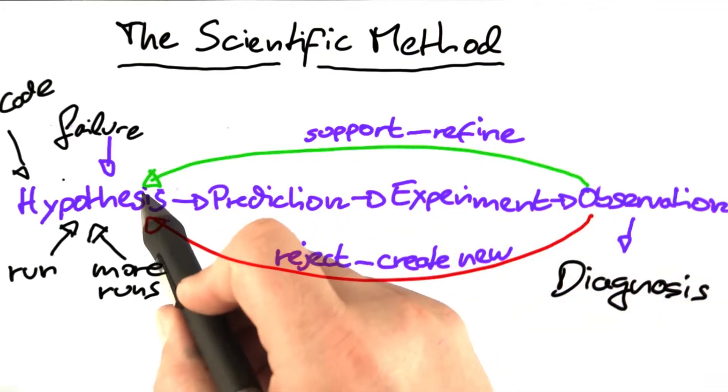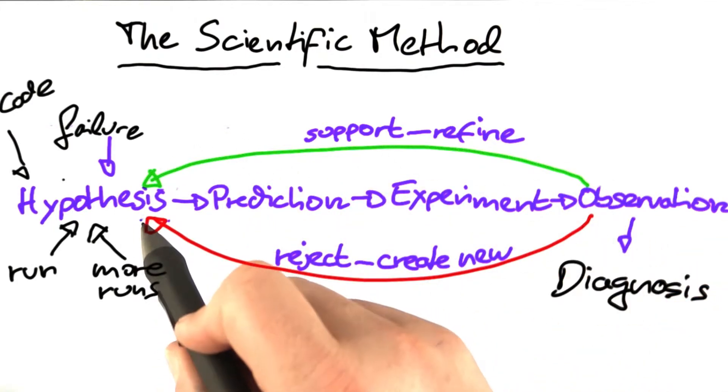We checked whether the experiments validated the prediction. If they did, we refined our hypothesis. If they didn't, we came up with alternate hypothesis.